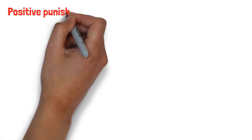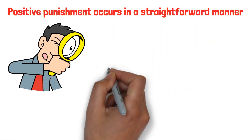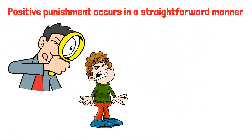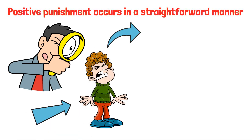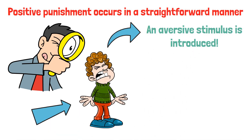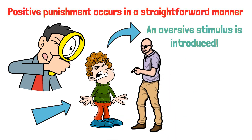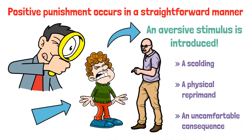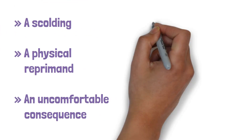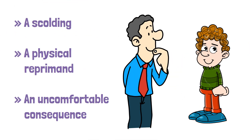Positive punishment occurs in a straightforward manner. First, an undesired behavior is identified. Next, immediately after this behavior occurs, an aversive stimulus is introduced. This stimulus can be anything unpleasant such as a scolding, a physical reprimand, or an uncomfortable consequence. The purpose of this added stimulus is to reduce the frequency of the undesired behavior.